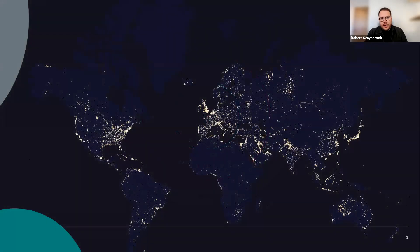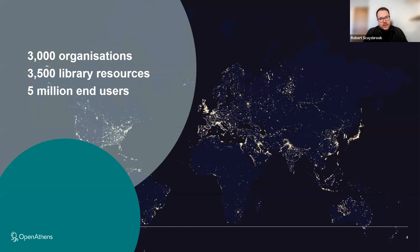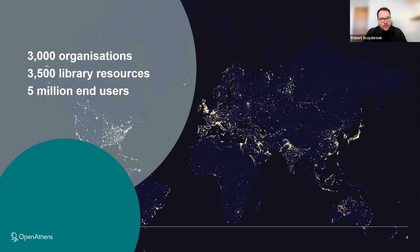There are around 3,000 organisations that use OpenAthens today — libraries and publishers from across medical, academic, public library, school, government, and corporate sectors. There are over 3,500 library resources — journals, databases, and technology services — compatible with OpenAthens for single sign-on. And we regularly have 5 million end users on a monthly basis authenticating to library resources using the OpenAthens platform.